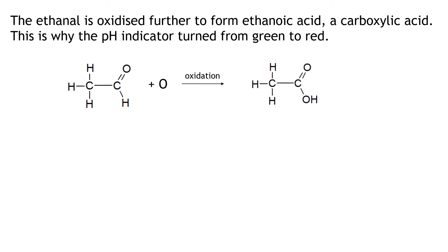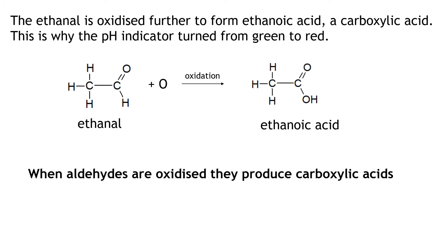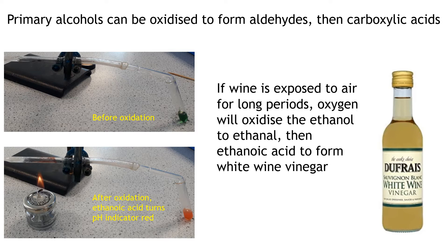In the video, the pH indicator turned from green to red when ethanol was oxidised by copper II oxide. The reason for this is that the ethanal formed in the first stage of oxidation is oxidised further to form ethanoic acid, a carboxylic acid. Our ethanal gains an oxygen in an oxidation reaction to form ethanoic acid. So when aldehydes are oxidised, they produce carboxylic acids. In summary, primary alcohols can be oxidised to form aldehydes, which can then be further oxidised to carboxylic acids — and in this experiment the ethanol was oxidised to ethanoic acid, which turned the pH indicator red.